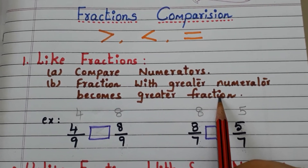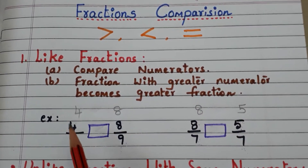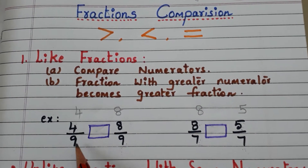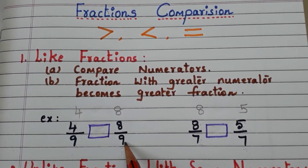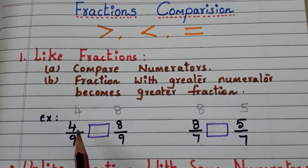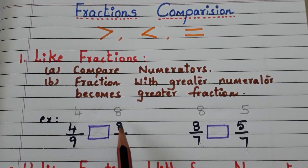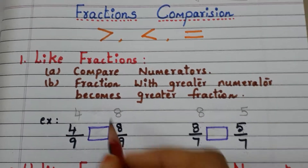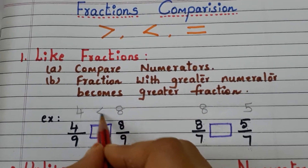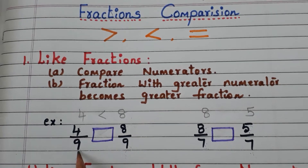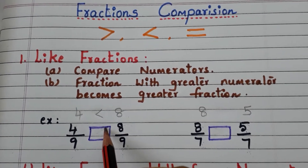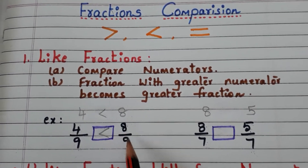Let us see in the example. Here we have 4 by 9 and 8 by 9. Compare the numerators 4 and 8 — here 4 is less than 8. So 4 by 9 is less than 8 by 9.